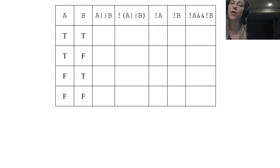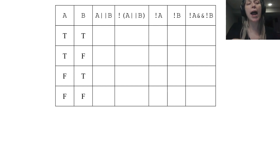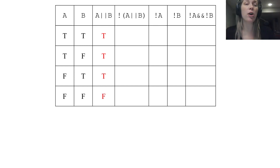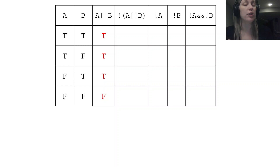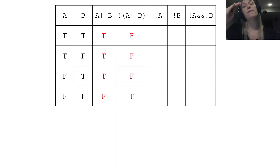Let's start with the first DeMorgan Law. I have a truth table — let's fill it out. I have the different combinations of A and B: true-true, true-false, false-true, false-false. The first column is A or B. A or B evaluates to true whenever both or either one is true. Then I have not (A or B), so I take that A or B column and switch the logic on it, making it false, false, false, true.